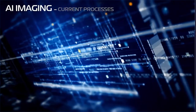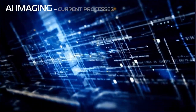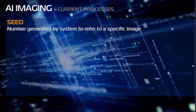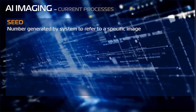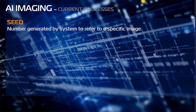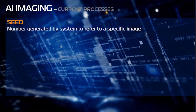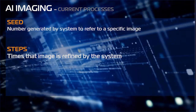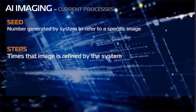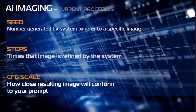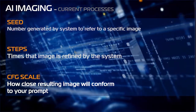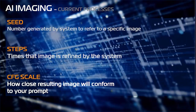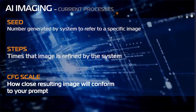Before we discuss where to get this software, there are three vocabulary words you need to know. First is SEED — the unique identifying number generated by whichever system you're using; for Stable Diffusion it's 'seed,' for MidJourney the term is 'Job ID.' Steps refers to the number of times an image is refined by the system; each model has its own best-use guide for the number of steps. Config Scale refers to how close your image will conform to your text and image prompt — the higher the number, the more closely the result resembles what you described.